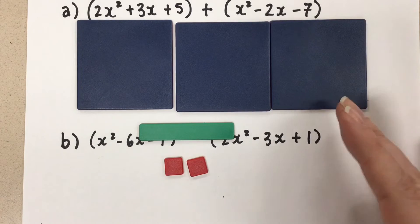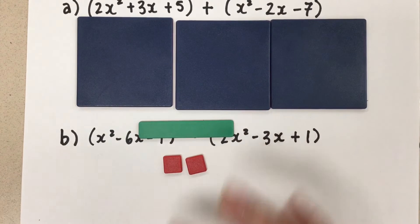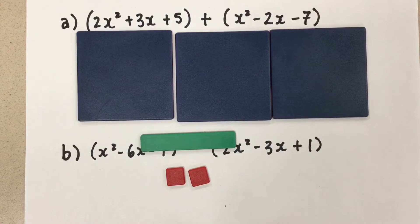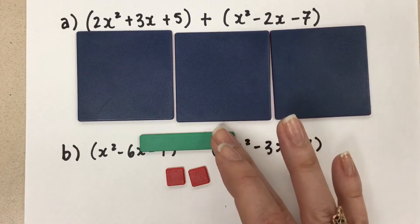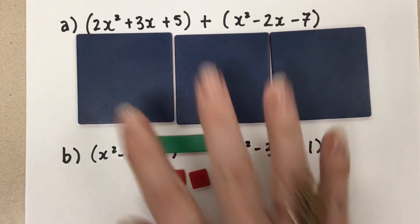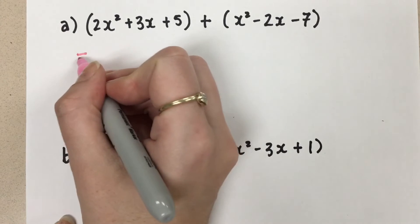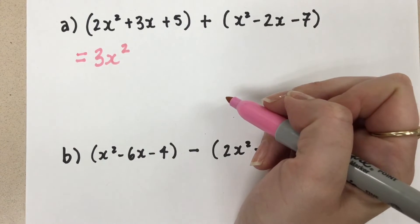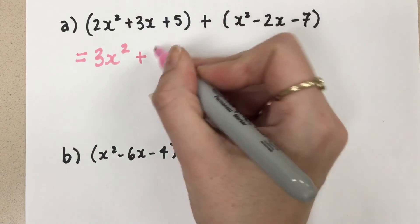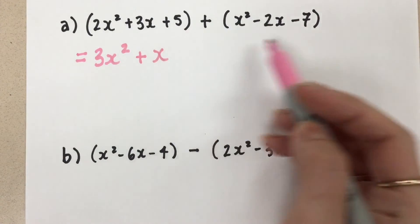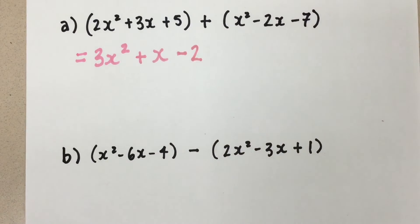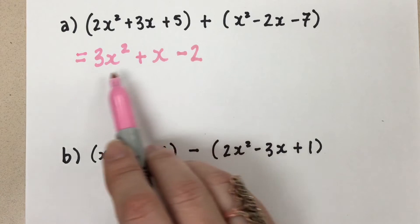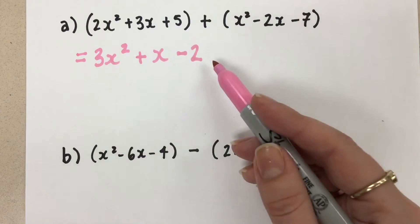So there's our final answer. 3x squared plus 1x minus 2. That's how we combine the polynomials using the algebra tiles. So now we have that visual of how these like terms are coming together. Notice how we only combine x squareds with x squareds, we only combine x's with x's, and we only combine 1's with 1's. We had 3x squared and we had 1x left, it was positive. And then we had minus 2 ones. So that is our final answer.